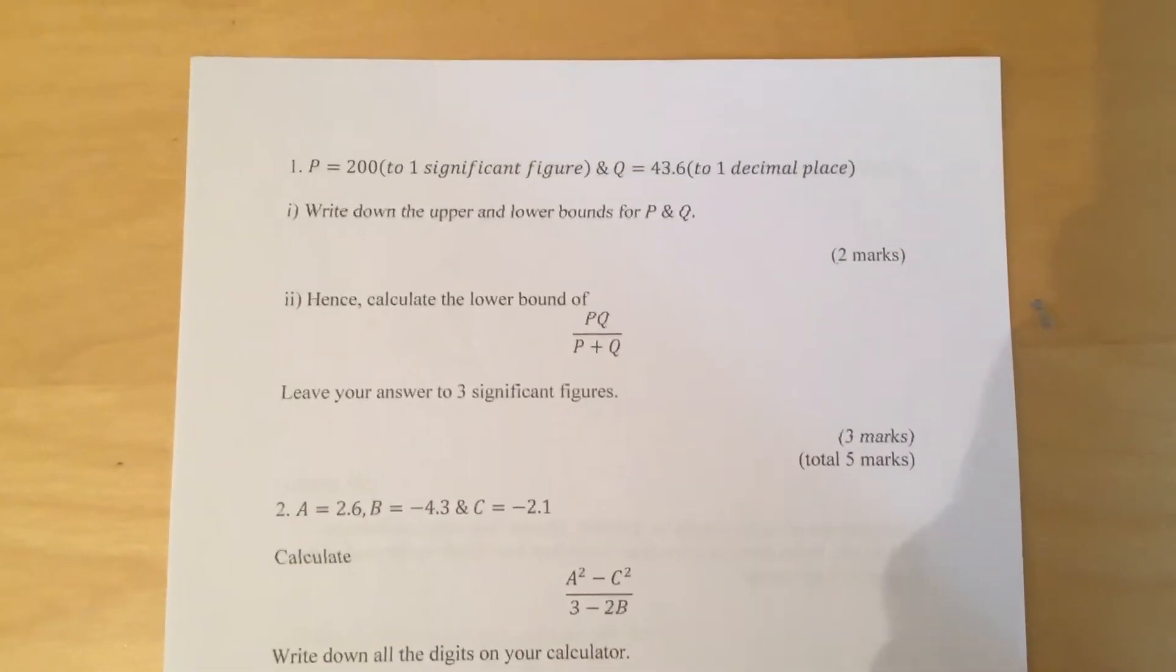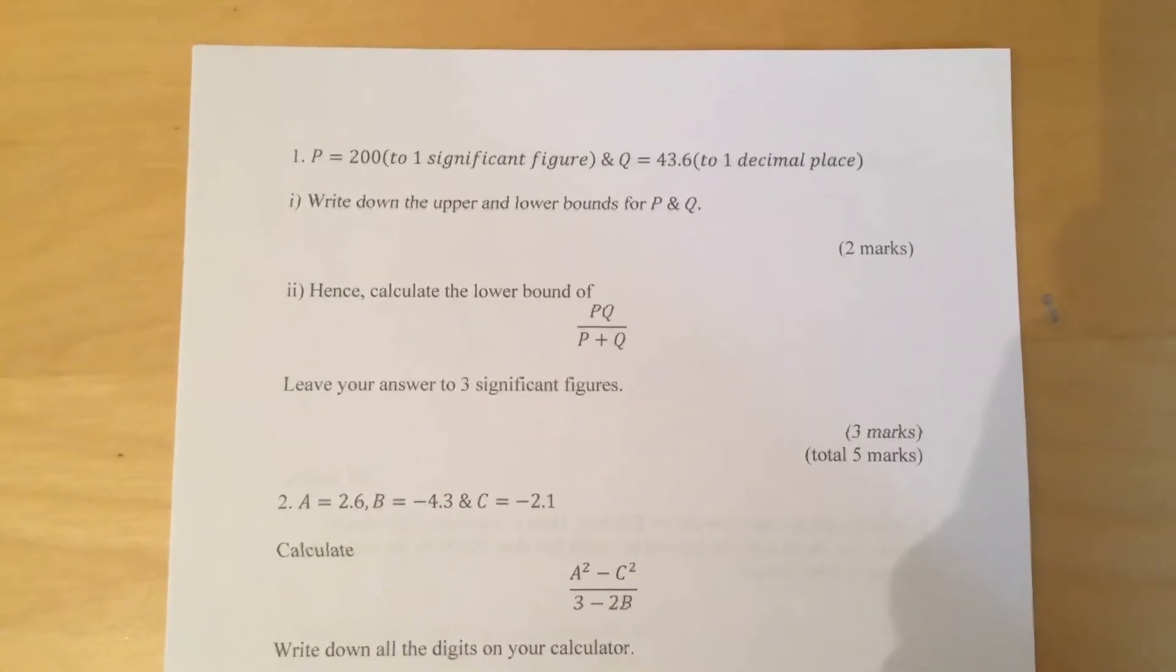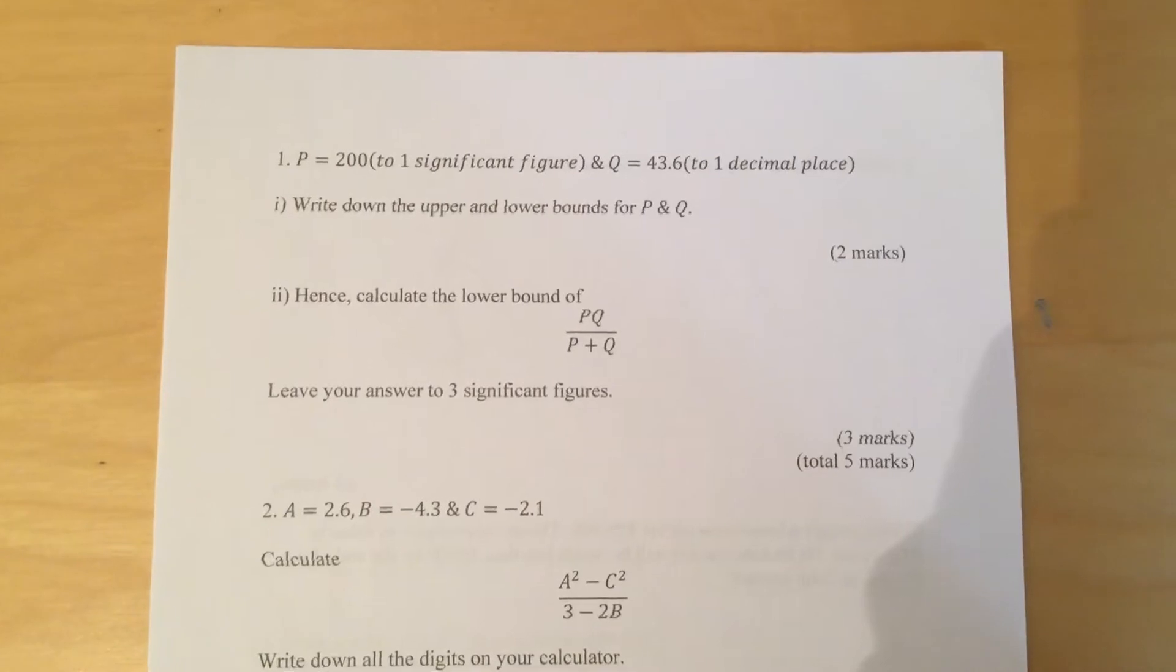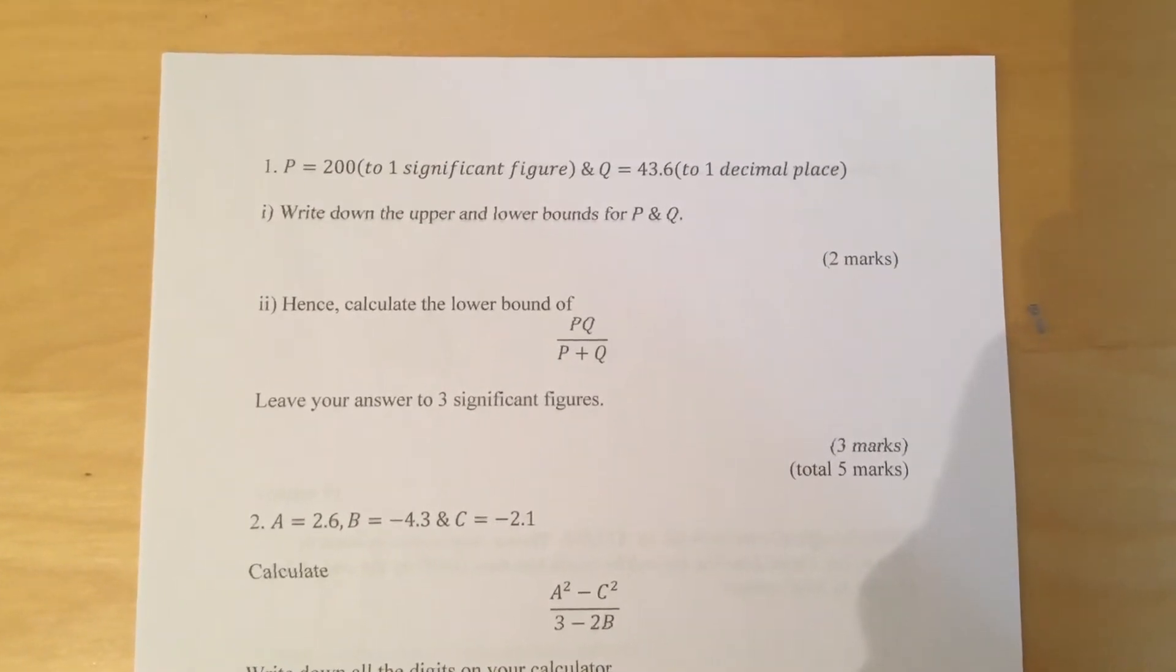Hello people, this is the paper 2H for Edexcel GCSE Maths. It's a predicted paper. So question 1. P is equal to 200 to 1 significant figure, and Q is equal to 43.6 to 1 decimal place.